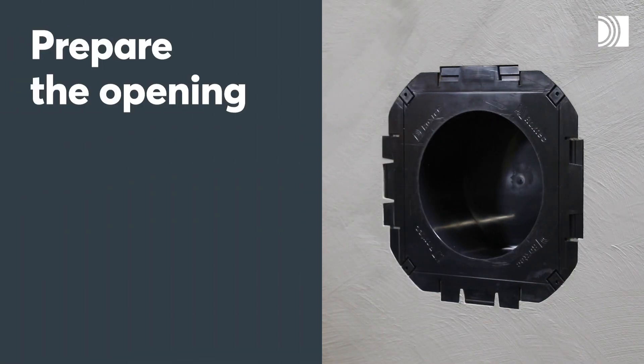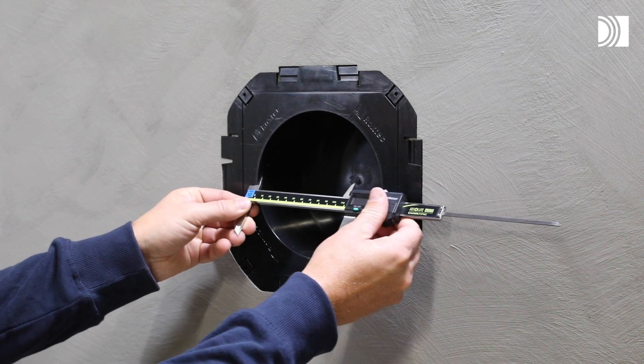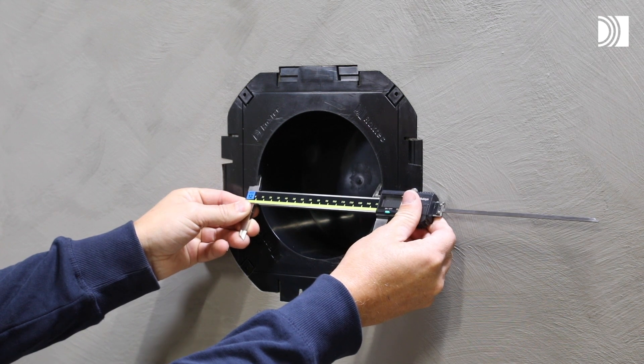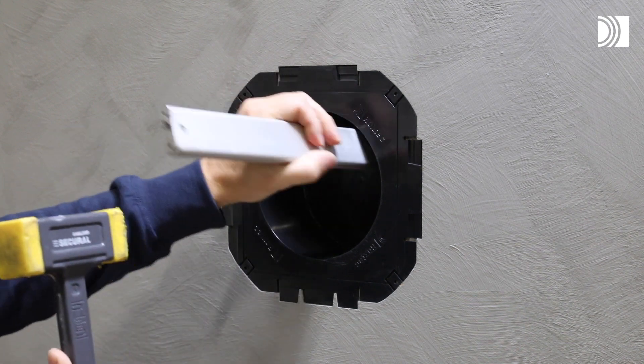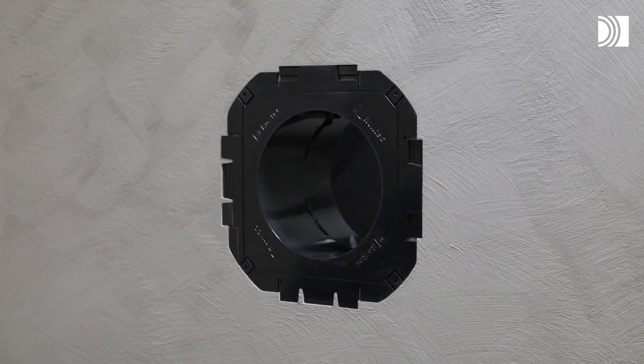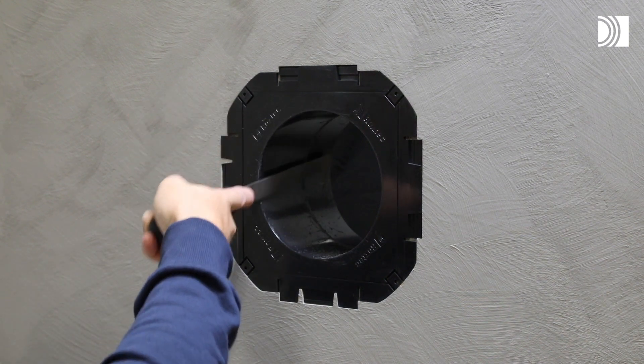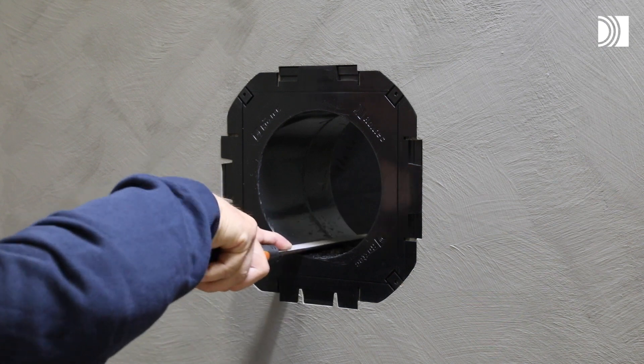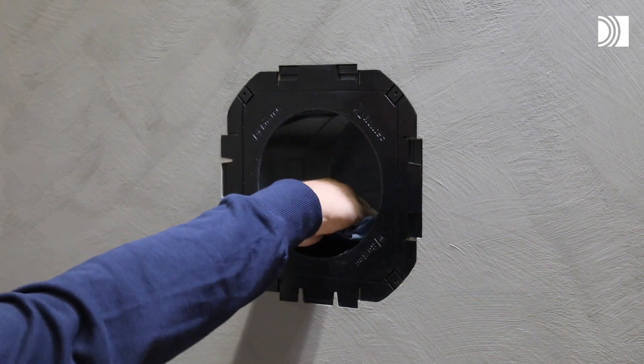Prepare the opening. In this case, a Roxtec H3UG Seal is installed in a Roxtec knockout sleeve. Start by verifying the aperture. Remove the knockout plate of the sleeve. Remove any residues and clean the aperture.